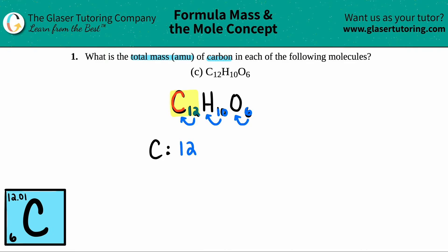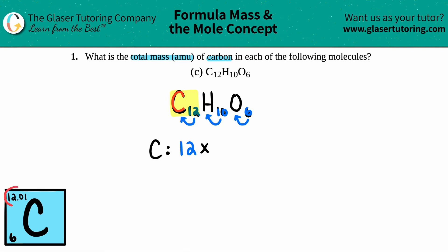Now you're going to take the total number of carbons and multiply it by the mass of carbon in AMU. And where are we going to find that mass? On the periodic table. I drew what carbon looks like on the periodic table. For every element, there are two numbers you should know. There's a smaller number — for carbon, that's 6 — and the larger number for me is 12.01. The masses can vary depending on what periodic table you're using, but the atomic numbers should never vary.